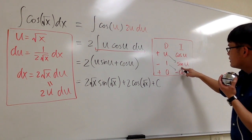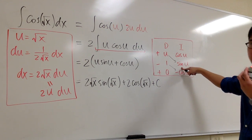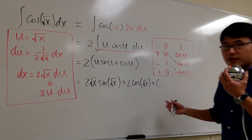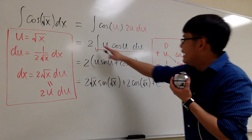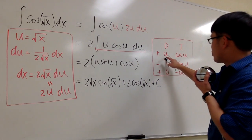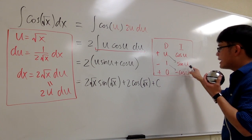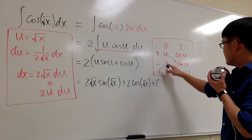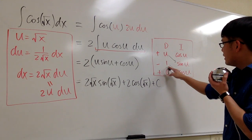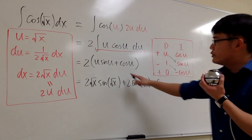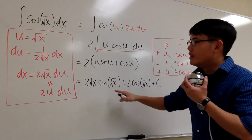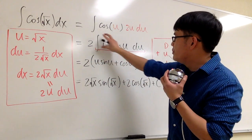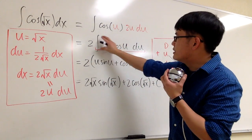Integrate cosine u — it will first give you sine u, and then integrating again gives you negative cosine u. And we're done, pretty much. This integral gives you the product of the diagonals: u times sine u, right here. The second diagonal is negative 1 times negative cosine u, which gives positive cosine u. Remember, we have a 2 in the very front, and technically these are parentheses because this whole thing represents that integral.